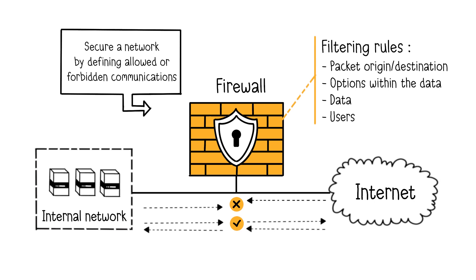Firewalls protect the interconnection between different security-level networks, such as the internet and a company's internal network. For example, the internal network is a high-trusted network, and the internet is a low-trusted network. Firewalls play a security role by controlling data flows, both incoming and outgoing traffic.